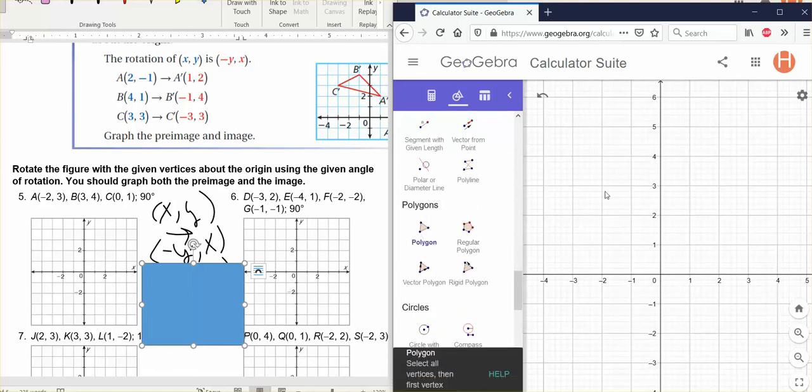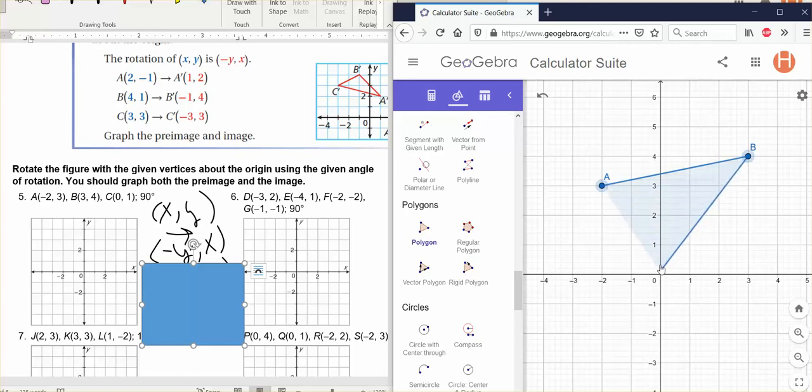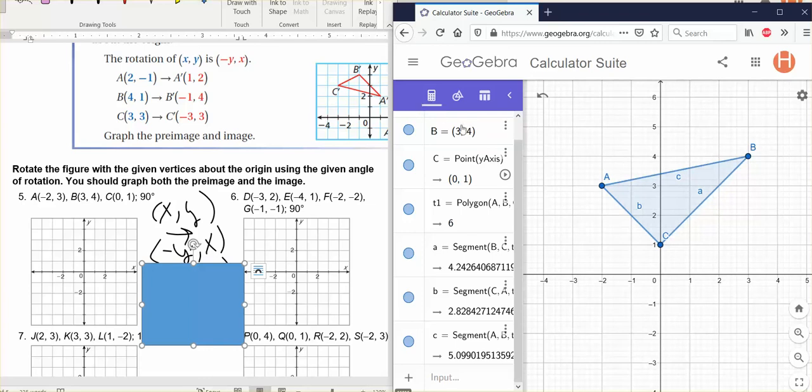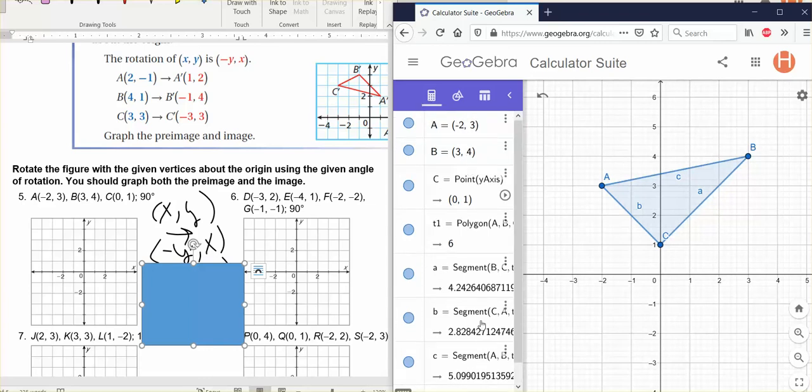I'm going to make my polygon. And it tells you some hints down here. It says select all vertices, then first vertex again. So I want my first point to be at negative two, three. So at negative two, three, I use my mouse and click and it creates point A for me. And then B is at three, four. So I go over three and up four, make another point. And then my next point is at zero, one. And then go back to A and click and it'll create your polygon. You can also check the coordinates by clicking back on the calculator and seeing there's some extra stuff here that you don't have to worry about, but I can see that my points are where I wanted them to be.